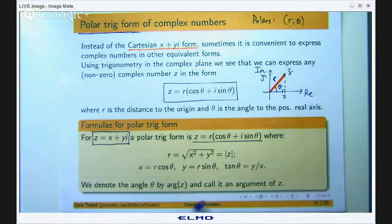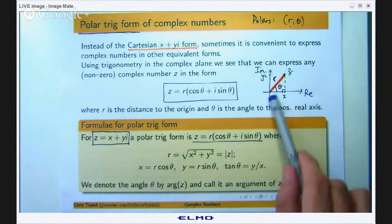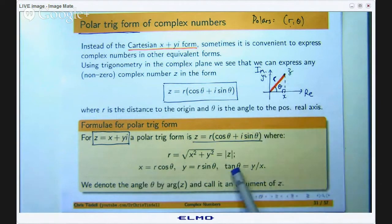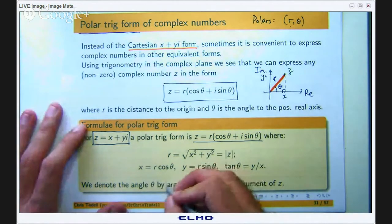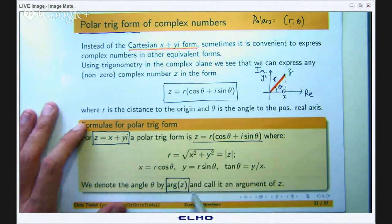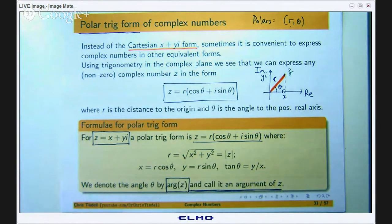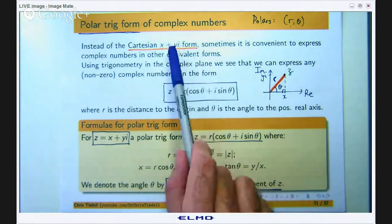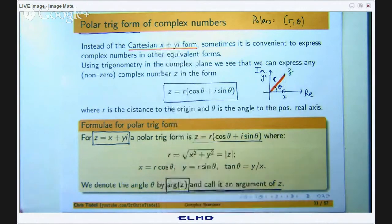If you use trigonometry here you can show that x equals r cos theta, y equals r sin theta, and so tan theta is just y over x. Now the angle theta is denoted by arg of z with a little a and we call theta an argument of z. If you were given a complex number in Cartesian form where you knew x and y you can immediately compute r and you can compute the argument of z as well.